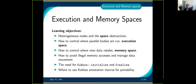Now we'll talk about execution and memory space. The execution space tells you where the code is going to run, and the memory space is where the data lives. We'll discuss how to avoid illegal memory access and how to move data around. We'll also explain why you need to initialize and finalize, and why you need to add some macros to your code to make it work both on the CPU and the GPU.